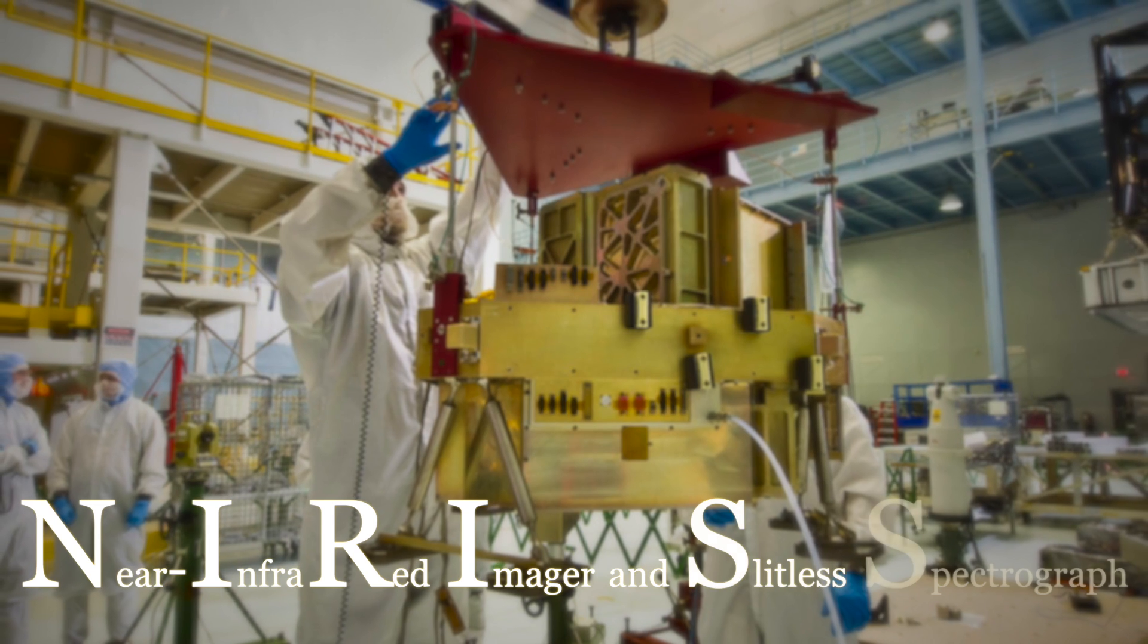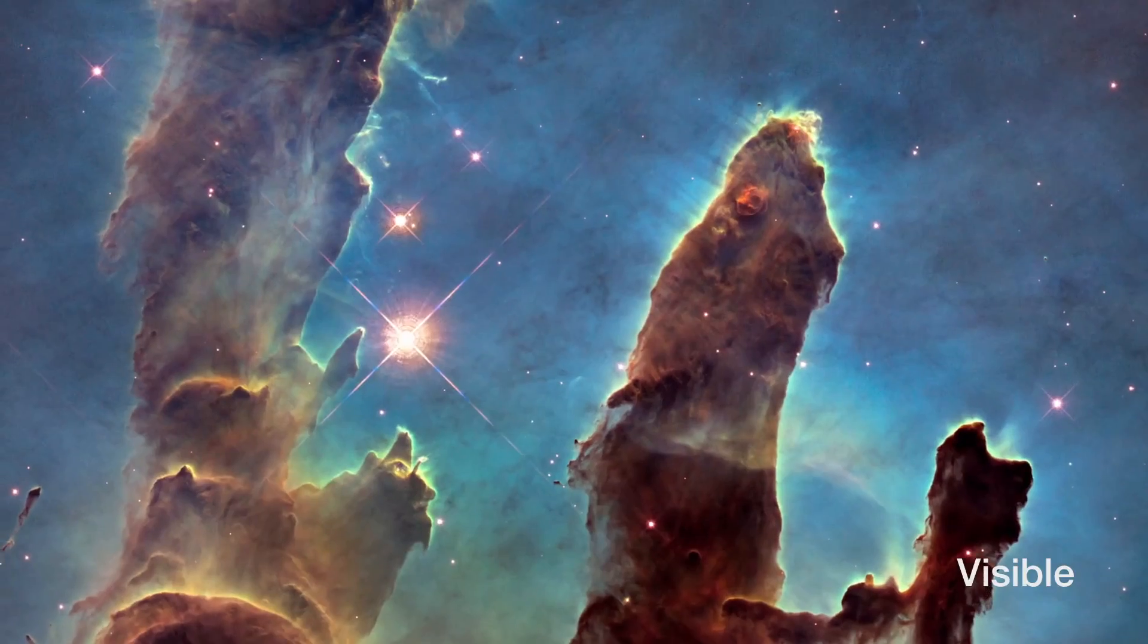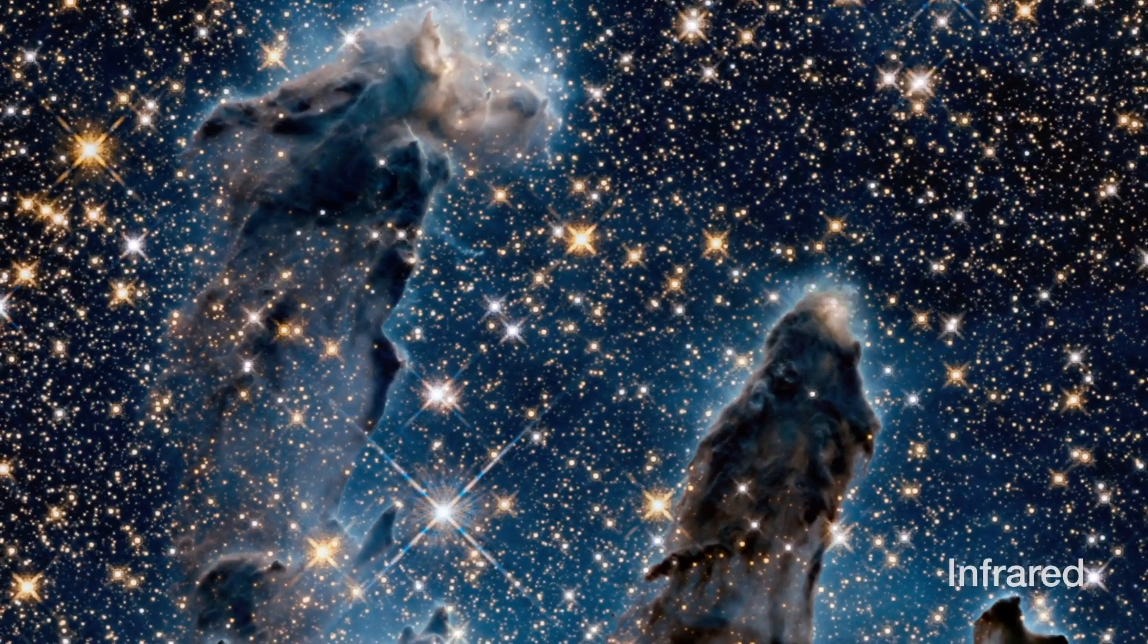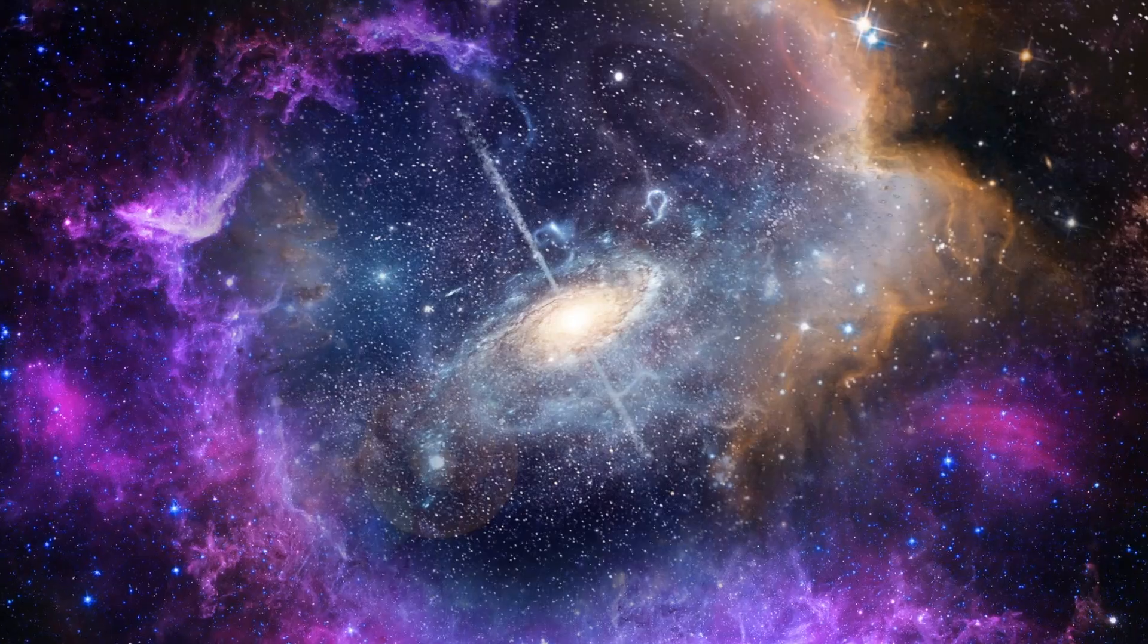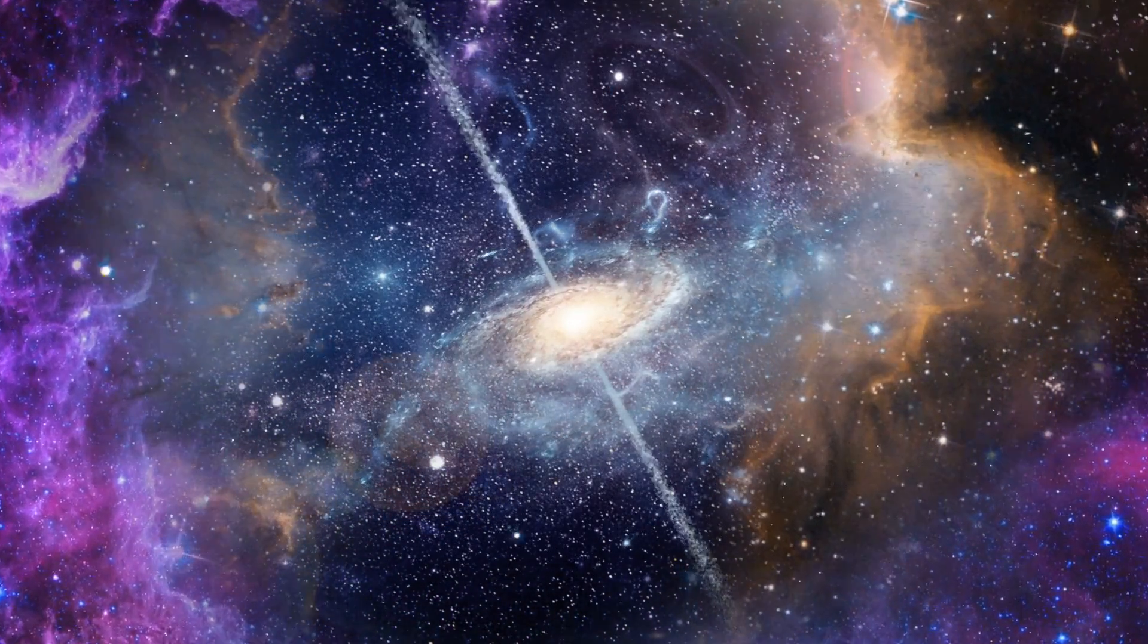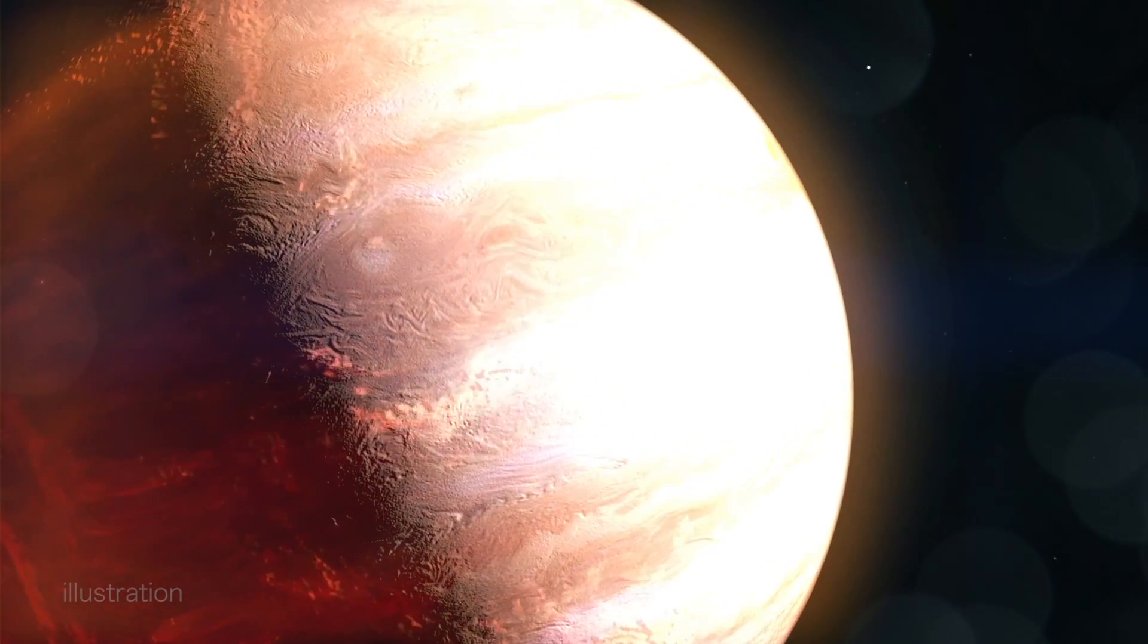NIRISS, or Near Infrared Imager and Slitless Spectrograph, which is a Canadian instrument, will be one of four that will observe in the infrared range and describe the atmospheres of a variety of exoplanets. The Webb Telescope will make it possible to use the mapping techniques at our disposal. Thanks to these measurements, we will be able to learn more about atmospheric processes.